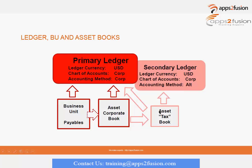Through the mass copy process, transactional information is transferred to the asset tax book. The asset tax book can be associated with both a primary and a secondary ledger.